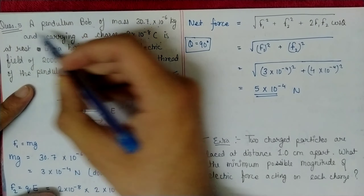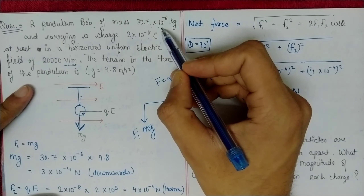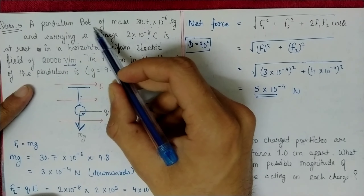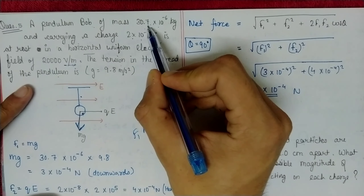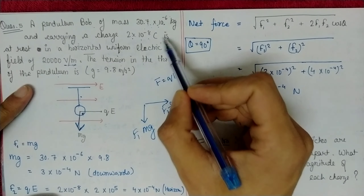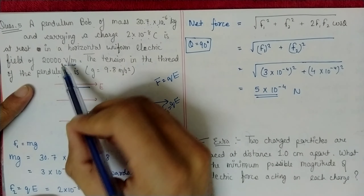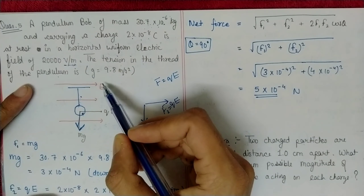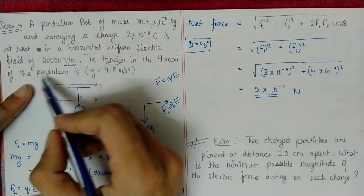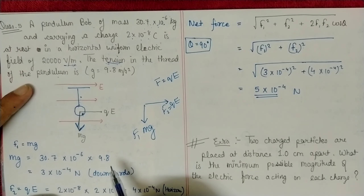Question 5: A pendulum bob of mass 30.7 × 10⁻⁶ kg carries a charge of 2 × 10⁻⁸ C. It is placed in a horizontal uniform electric field of magnitude 20,000 V/m. Calculate the tension in the thread of the pendulum.